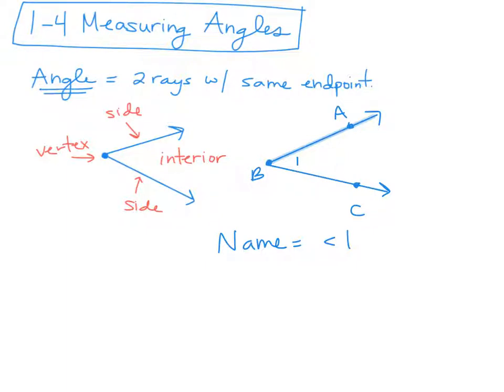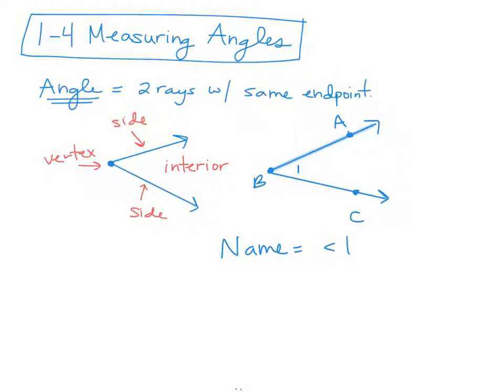Any guesses what might be another way that I could name this angle? Yeah, Chloe. Angle ABC. What did you say? Angle CBA. Okay, so you can do angle ABC. You can say angle CBA. There's one more. Yes. Angle B. So here's the deal.